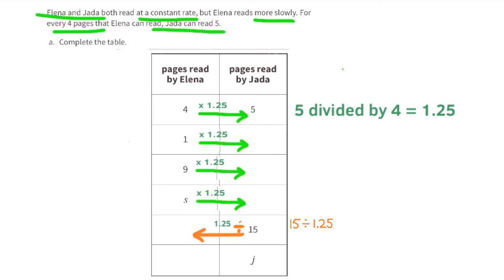Elena reads four-fifths the amount of pages Jada reads. When Elena reads 1 page, Jada reads 1.25 pages. When Elena reads 9 pages, Jada reads 11.25 pages. When Elena reads S pages, Jada reads 1.25 times S pages. When Jada reads 15 pages, Elena reads 12 pages.